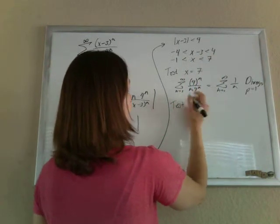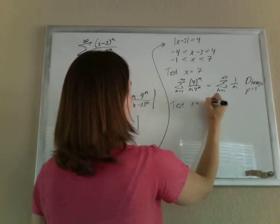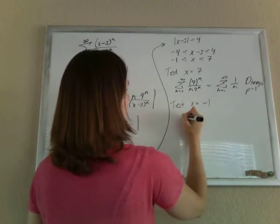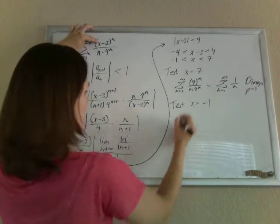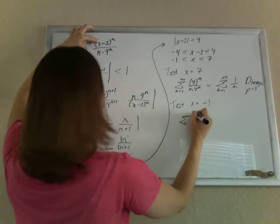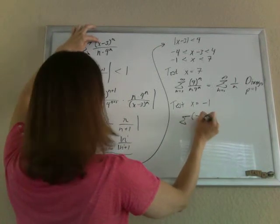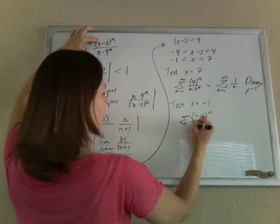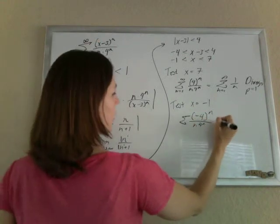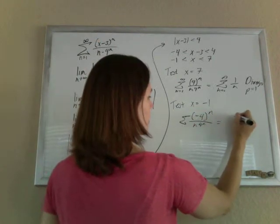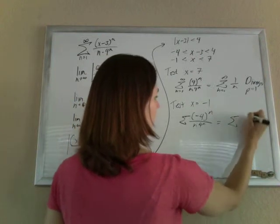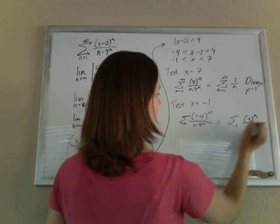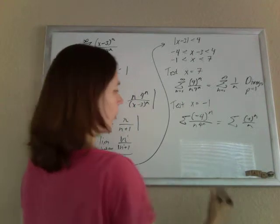But let's test x equals negative 1. And if I put in negative 1 for the x up here, I'll get negative 1 minus 3 is negative 4 to the n over n times 4 to the n. And so when this cancels, this makes negative 1 to the n over n.